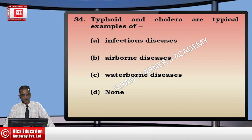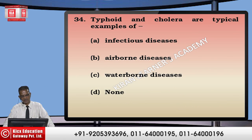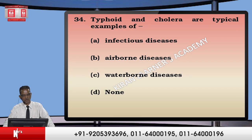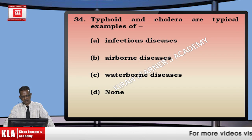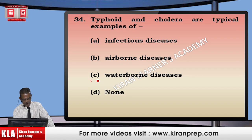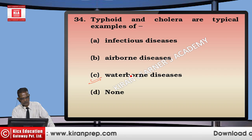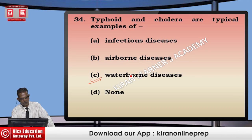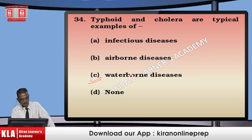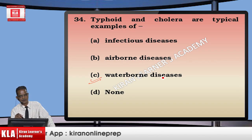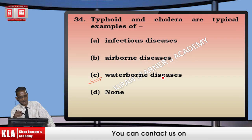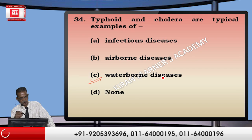Typhoid and cholera are typical examples of waterborne diseases. While they are also infectious diseases, they are not airborne. Among the types of infectious diseases — airborne, waterborne, vector-borne — typhoid and cholera are specifically waterborne. So waterborne disease is the more correct and specific answer, making option C correct.